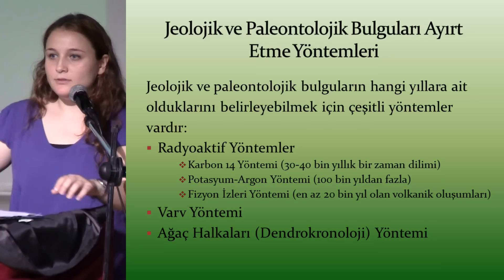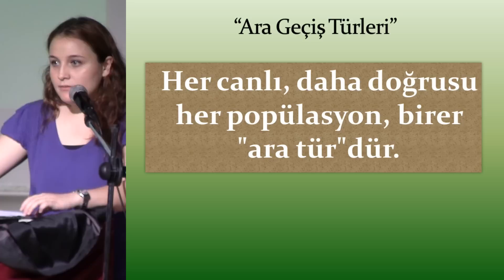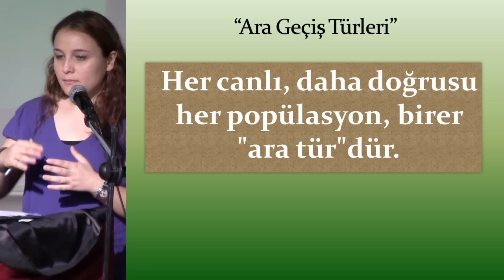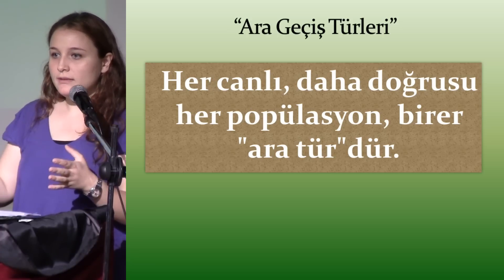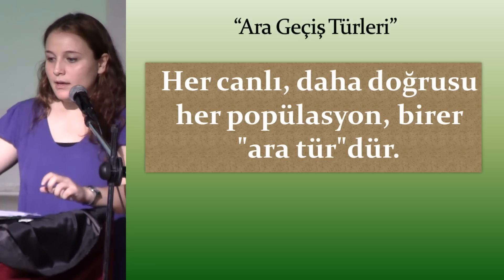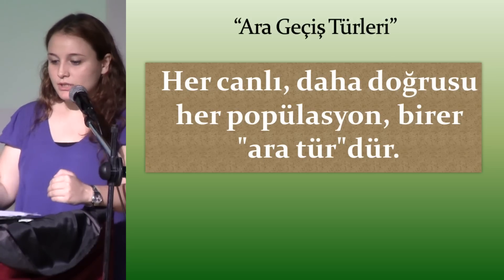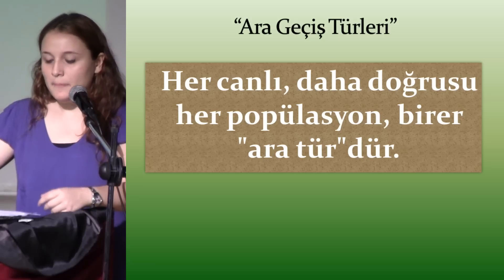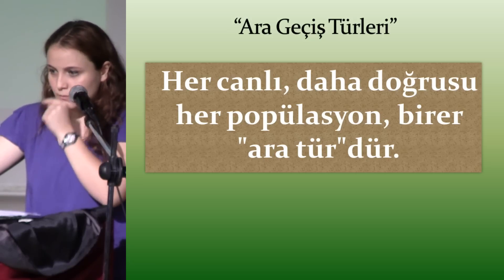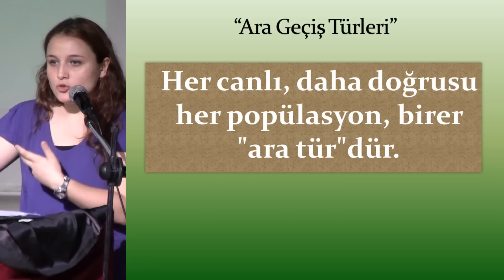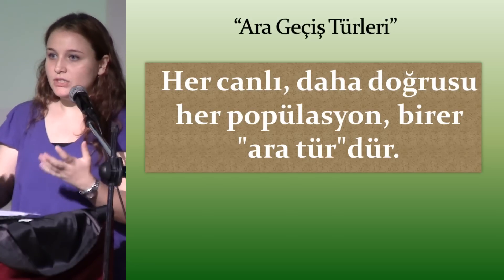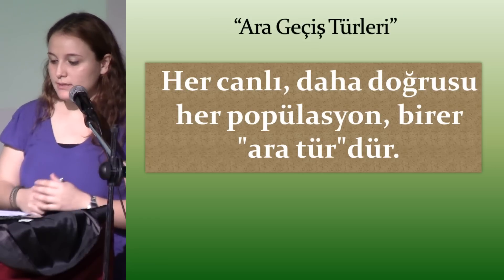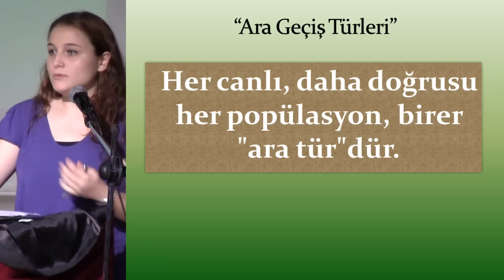Şimdi popüler bir söylem var: ara geçiş türleri. Evrimsel biyolojide 'ara geçiş türü' diye bir şeyi doğrudan tanımlamak doğru değil. Hiçbir canlı, bir balıktan bir sürüngenin direkt olarak oluşabilmesi mümkün değil; bunun için evrimsel süreçte ara basamaklar var. İleriki sunumlarda 'ara geçiş türü' diyebilirim ama bu aslında şu anki canlıların oluşumuna dair aradaki örnekler olarak anlaşılmalı.